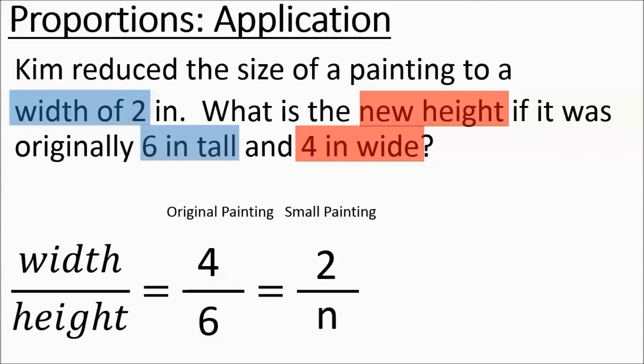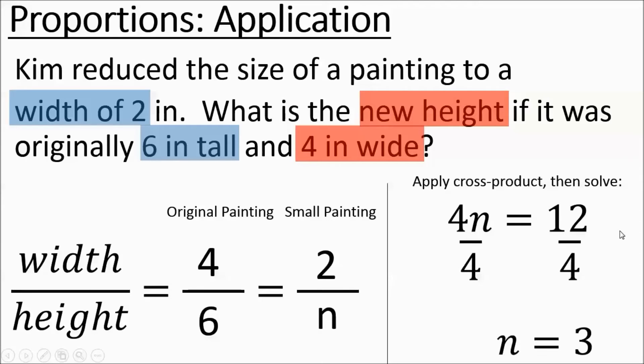So if we set up our cross product rule, we're going to do 4n equaling 12, 6 times 2 being 12, 4 times n. So it's the cross products. Divide out the 4 and you get 3 again. A lot of 3's in these problems. So our new height is going to be 3 of our small picture.